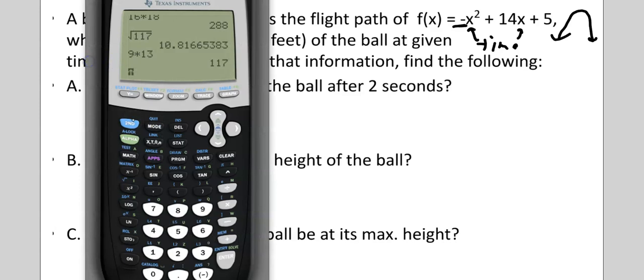And a quicker way to do that would be, let's use our calculator. So, I'm going to say negative X squared plus 14X plus 5. So, there's it going up in the air, comes back down eventually. It means it came down off the chart. So, where is it at two seconds? 29 feet.